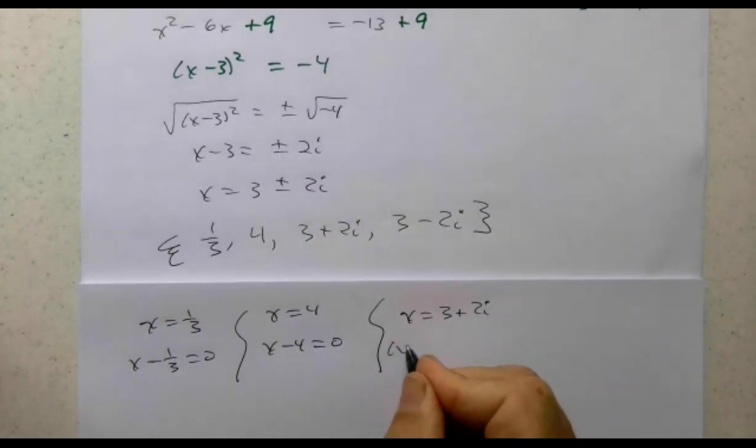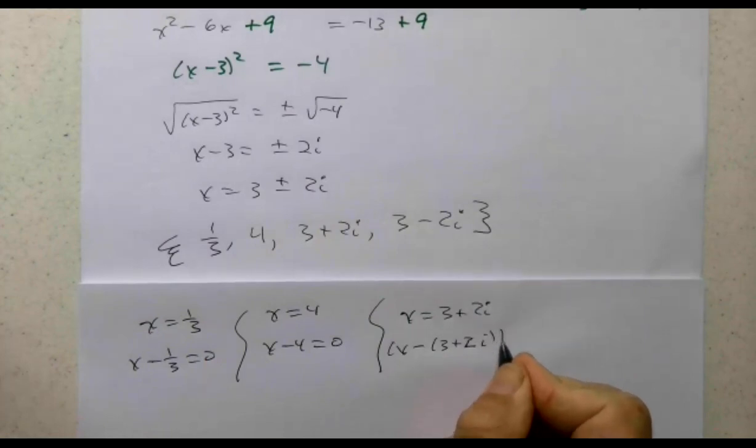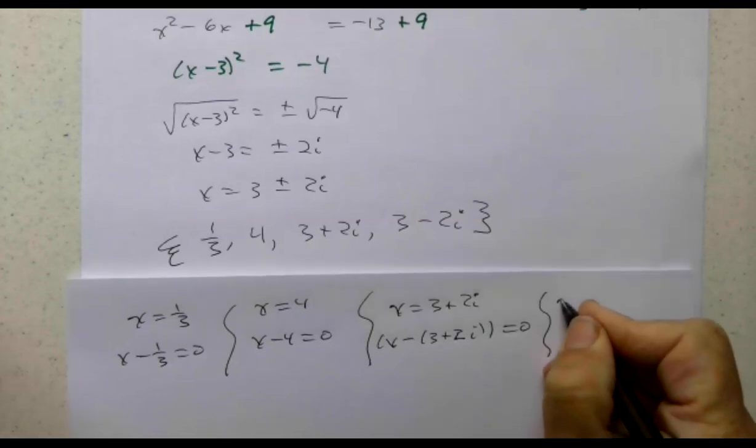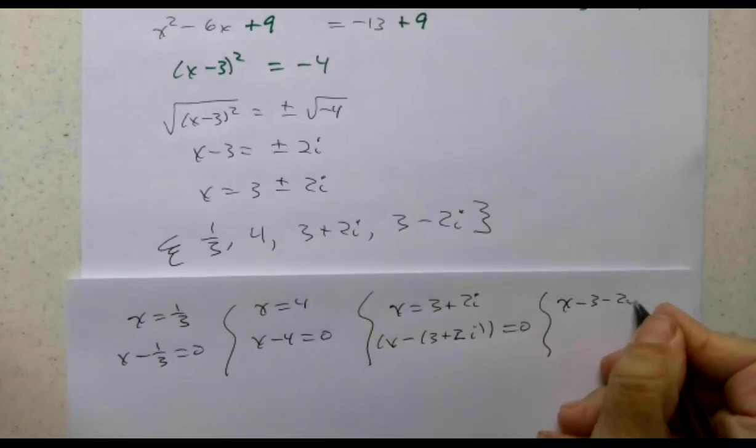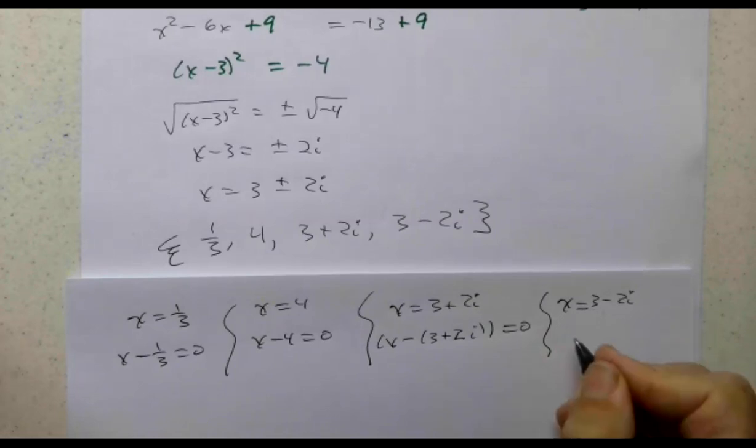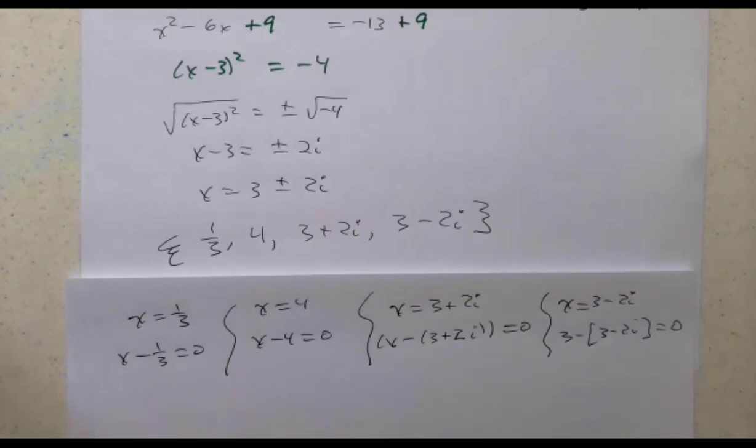x equals 3 + 2i, so x - (3 + 2i) = 0. And x equals 3 - 2i, oops, so x - (3 - 2i) = 0. So again, x - 1/3 = 0, x - 4 = 0, x - 3 - 2i = 0.